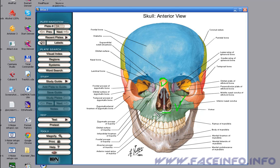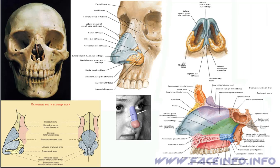This is the acanthion or anterior nasal spine of maxilla. This is the bony part of the nasal septum, and this is its cartilage part. These are the upper or superior lateral nasal cartilages. These are the major, or greater, or lower alar cartilages.